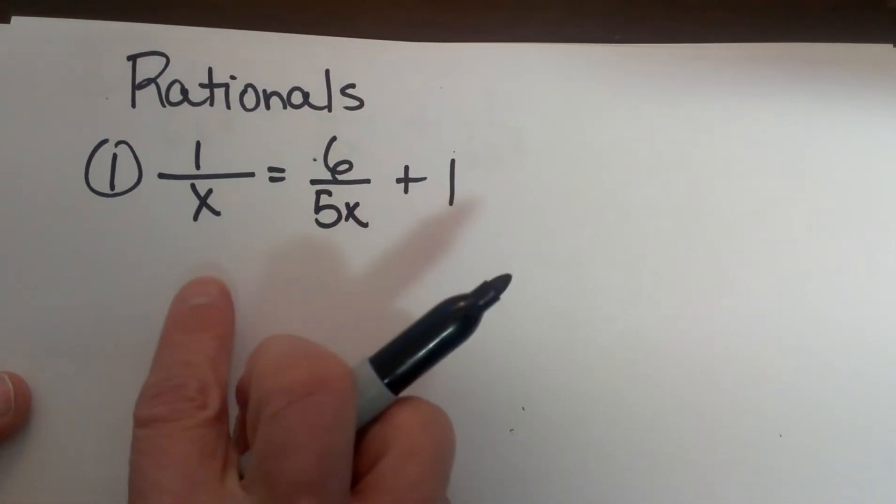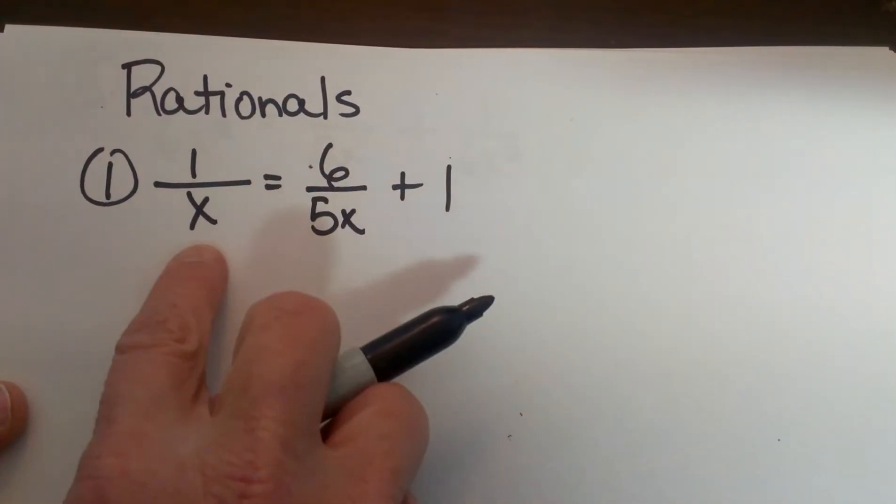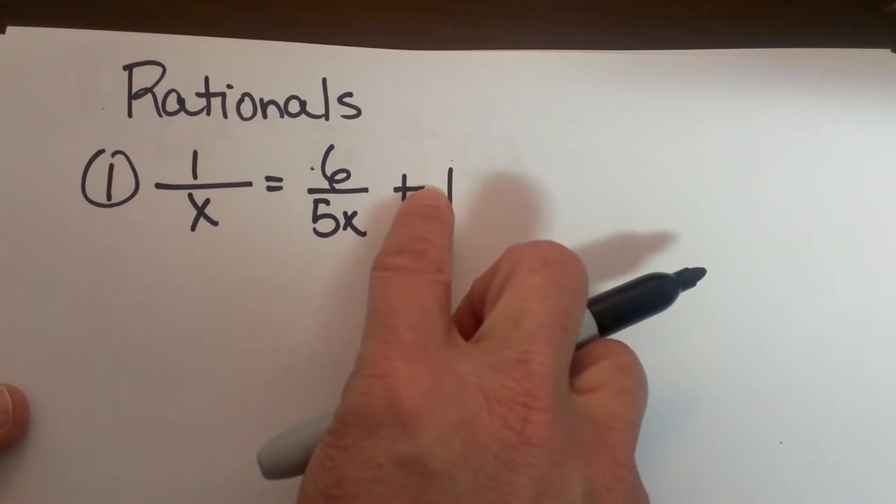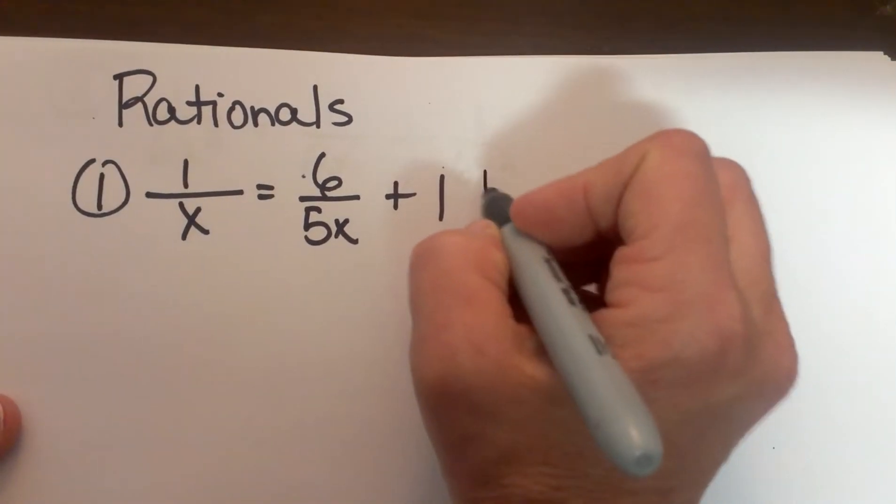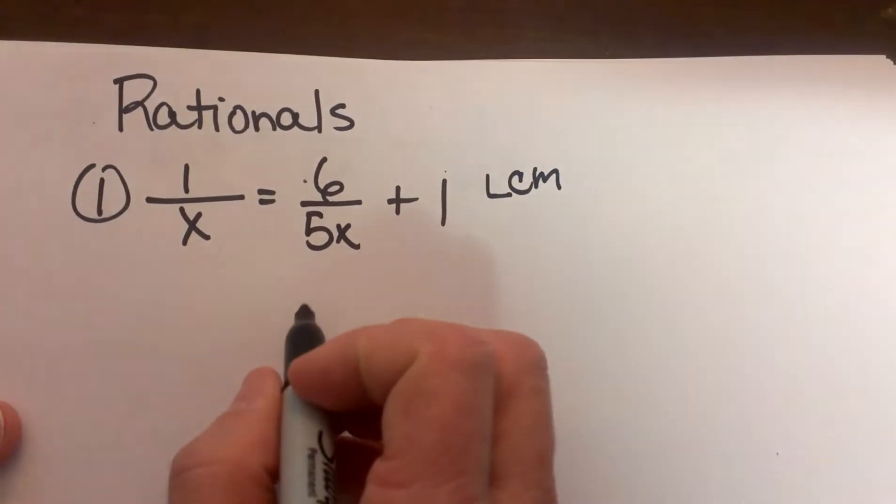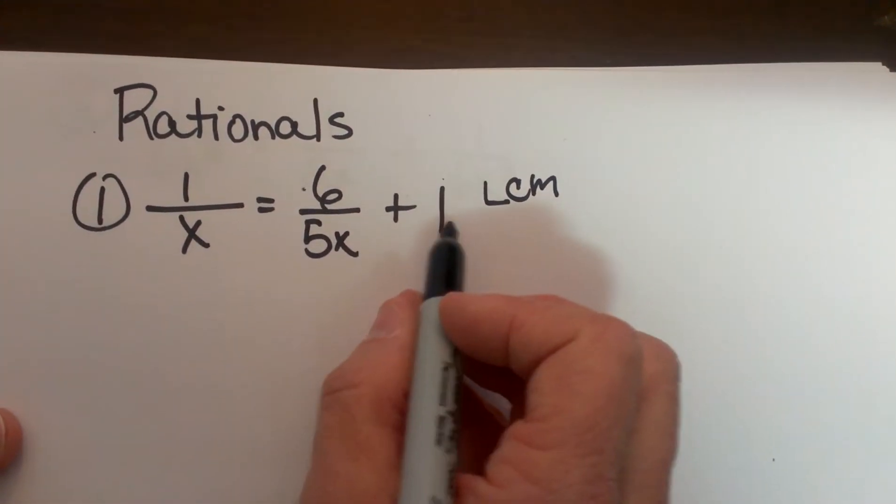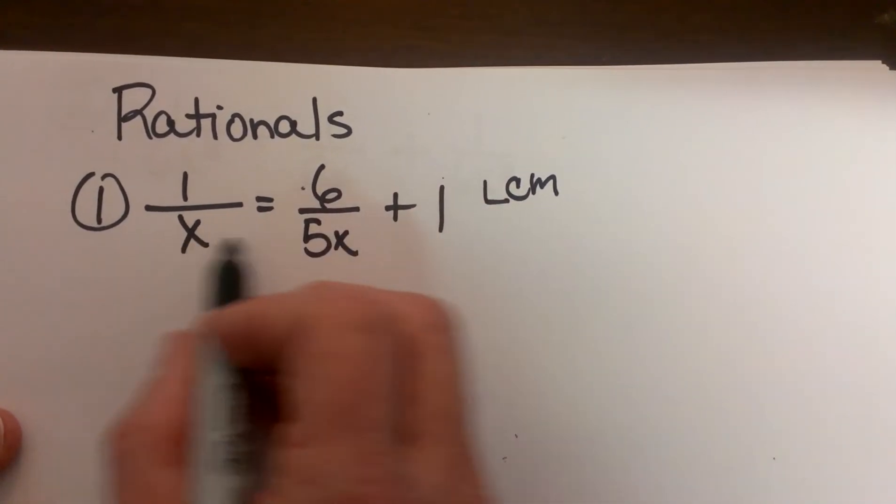It is an equation and we can't just cross multiply because we have an extra term over here. So we are going to have to deal with this using our least common denominator or LCM. So we need to look first what is our least common denominator or least common multiple in the denominator.